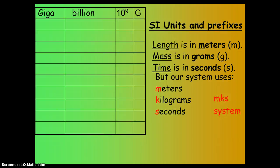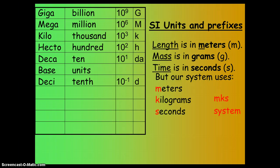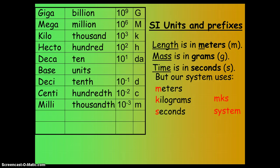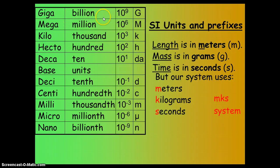I'm going to show you a list of prefixes here. Giga is a billion. Mega is a million. Kilo is a thousand. Hecto, a hundred. Deca, ten. Base units are right there. Below the base units, you go smaller now. Deci is one divided by ten, or ten to the negative first. Centi is one divided by a hundred. Milli is one divided by a thousand. Micro is one divided by a million. And nano is one divided by a billion. That's what those prefixes mean.